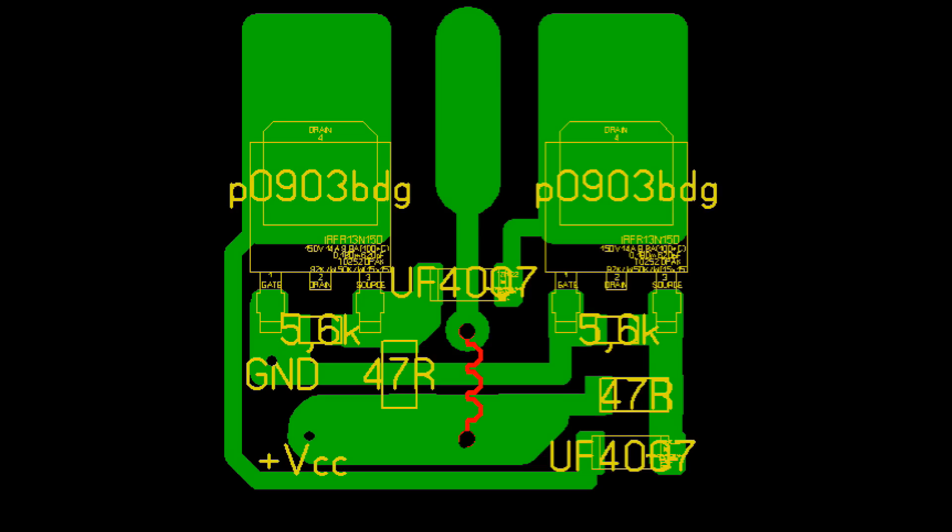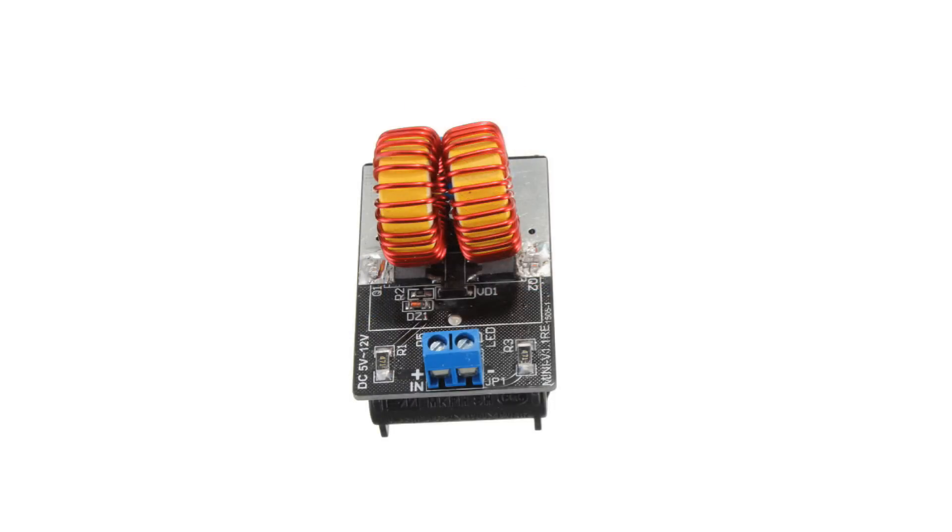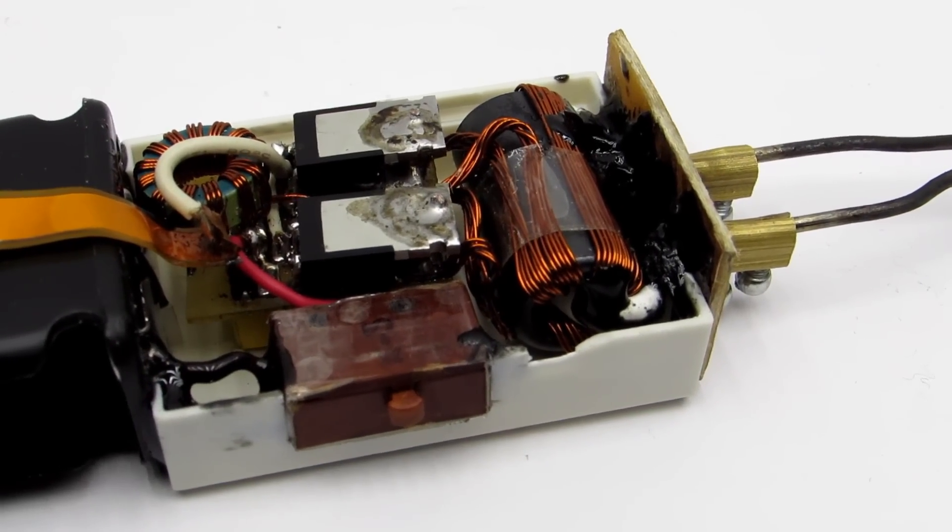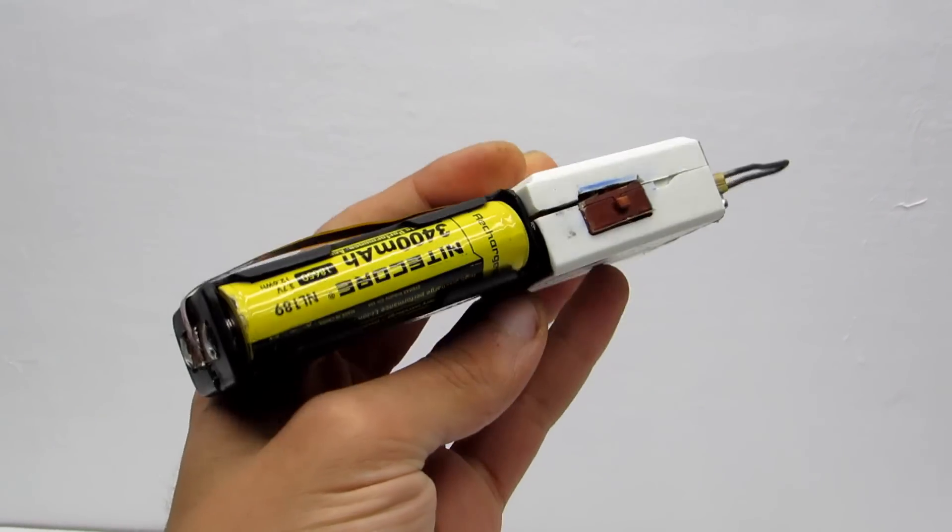Schematic and PCB you will find under the video. There are also links to purchase similar modules that can be used for the construction of such a soldering iron, as well as components that are used in this project. Thanks for watching. I will be grateful for a subscription. With you was Akka Kasyan.